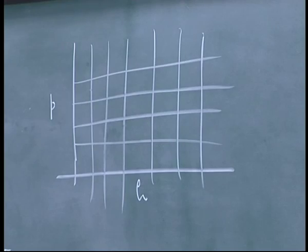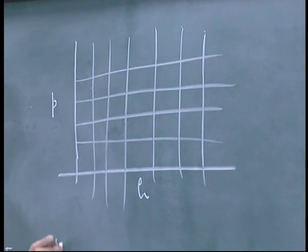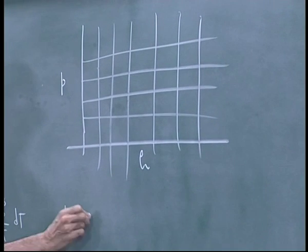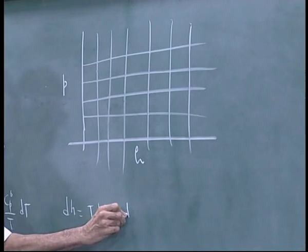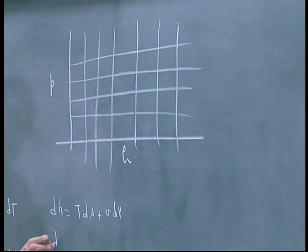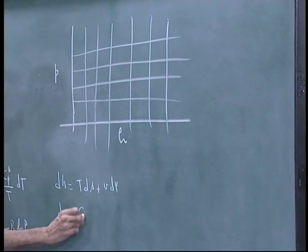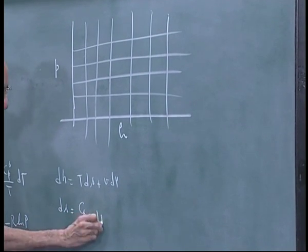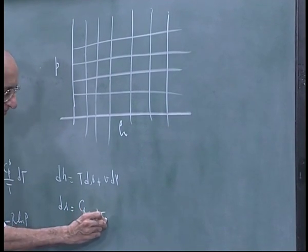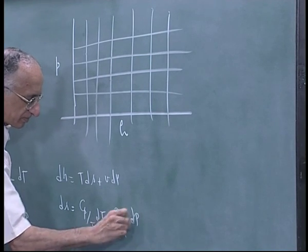The question is what about the other lines. If you look at isotherms, write this as T·dS + V·dP, and dS is (Cp/T)·dT minus the partial of V with respect to T times dP.